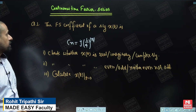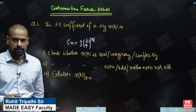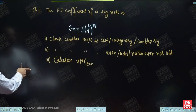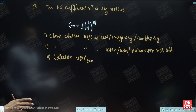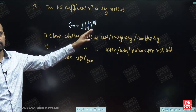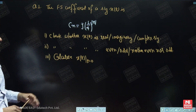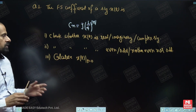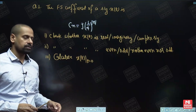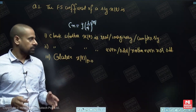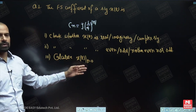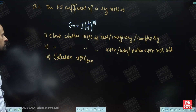The next chapter is continuous time Fourier series, so let us solve some questions related to CTFS. Question 1: for signal X(t), the exponential Fourier series coefficient is given. In the first part we have to check whether X(t) is real, imaginary, or complex. In the second part we have to check whether X(t) is even, odd, or neither. In the third part we have to calculate the value of X(t) at t equal to 0.